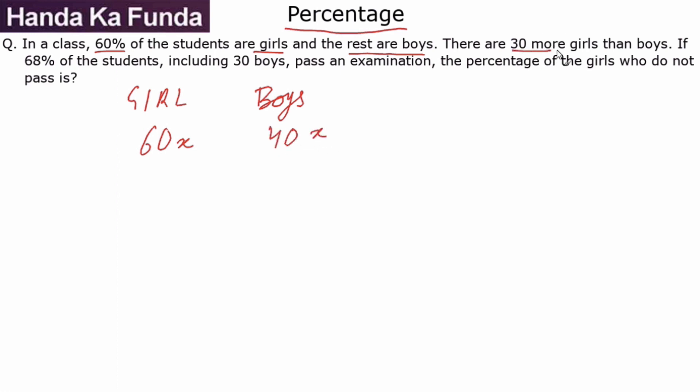We are given that there are 30 more girls than the boys. How many girls are more than the boys? As per our equation, 20x are extra, which is given to me as 30. So that gives me the value of x as 1.5, which will mean there are 90 girls, there are 60 boys, or a total of 150 students. This is the composition of the class.